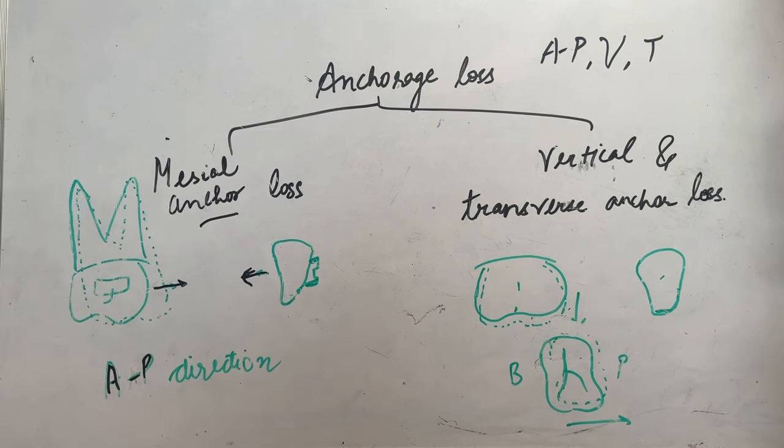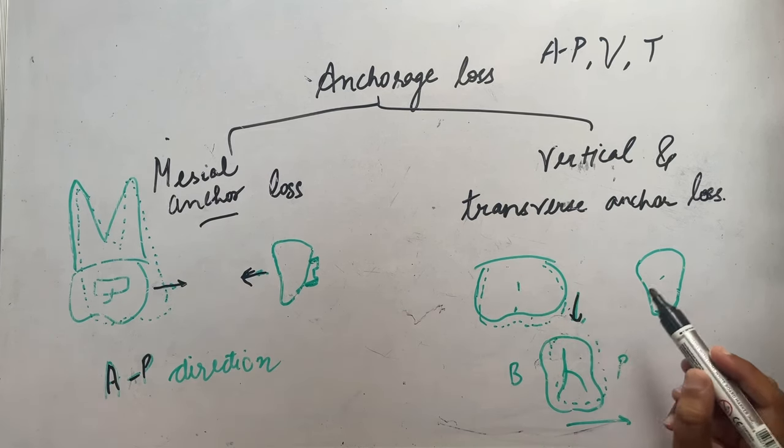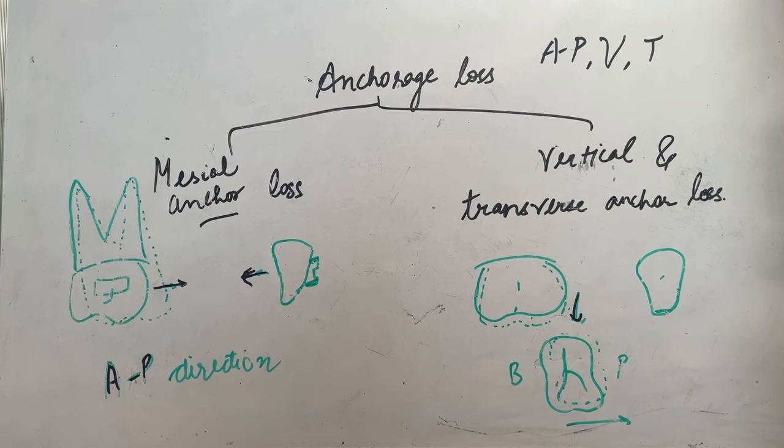Next, anchor loss is in vertical and transverse directions. We know that we have to consider all three directions. So the vertical direction will be that during retraction there is also extrusion of molar, so extrusion of molar will be considered in the vertical direction, and also there is a palatal movement of the molar which will be considered in transverse anchor loss.